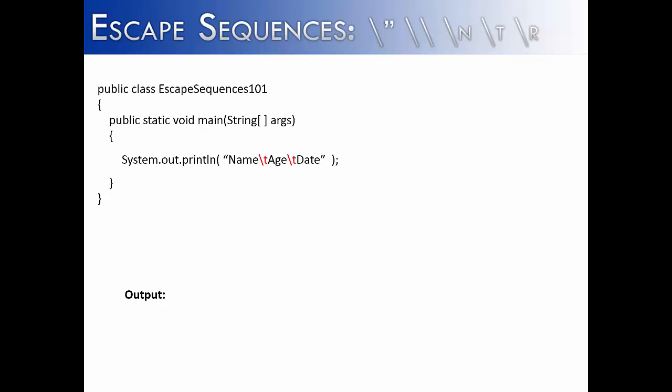In this example we're using the backslash t which when it prints out it's pretty obvious what it does. It acts as a tab. And so it's creating a tab space between each of the words. And so I have the words name, age, and date. There's a tab space between each word.